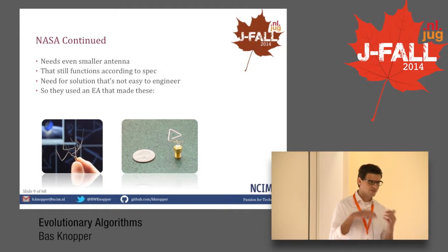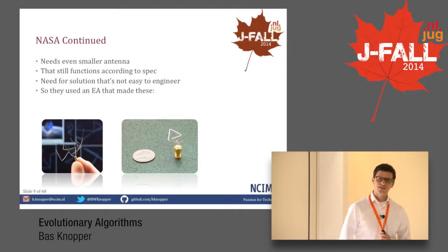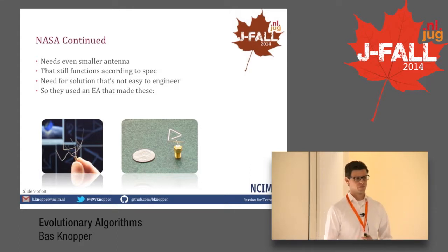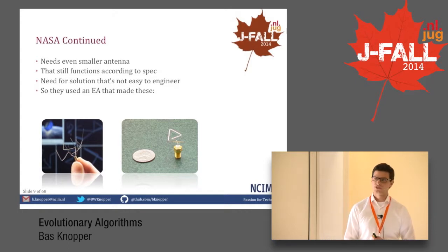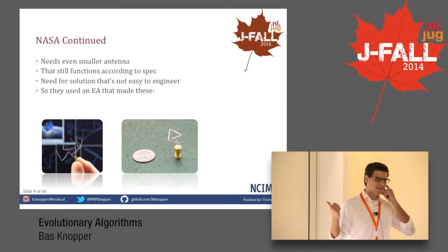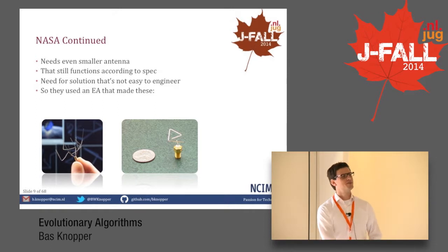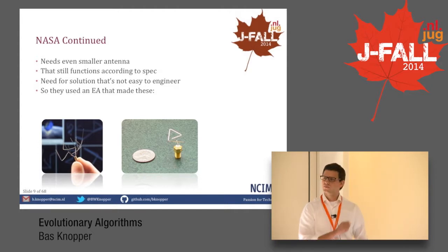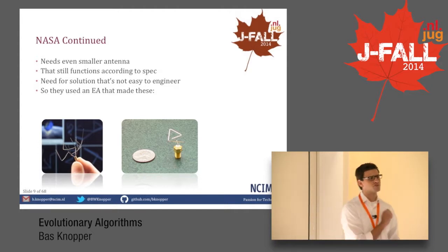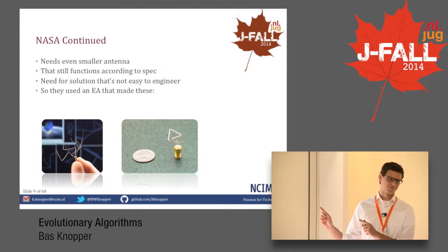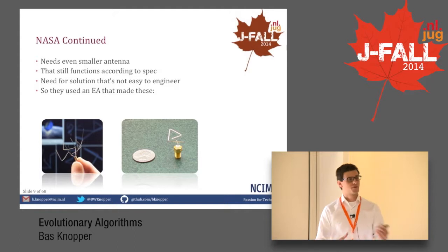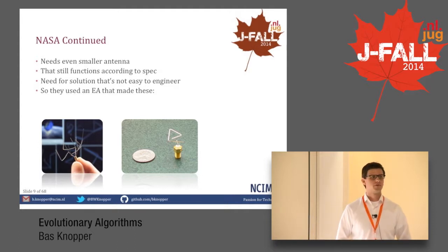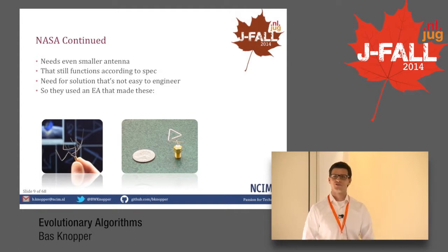So what's the problem? Since the spacecraft were so small, they needed an even smaller antenna, and this small antenna still needed to function according to the spec. This is the result. If you were to hand me a piece of paper and a pen and ask me to draw a really small antenna that would still work, I wouldn't draw these. And that's a funny thing, because these weren't drawn by a human — they were designed by an evolutionary algorithm.